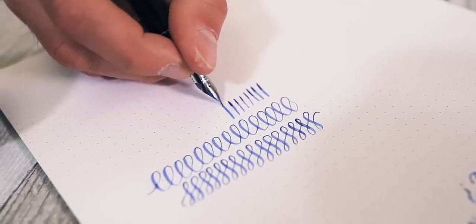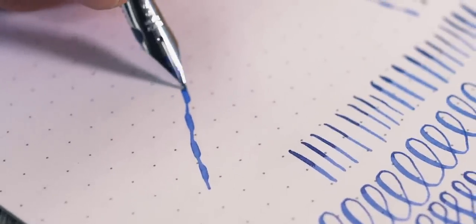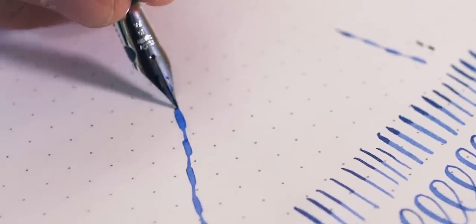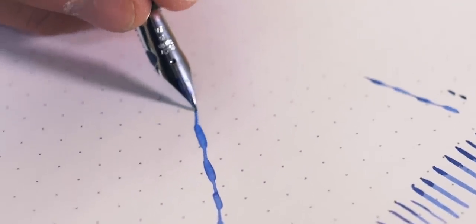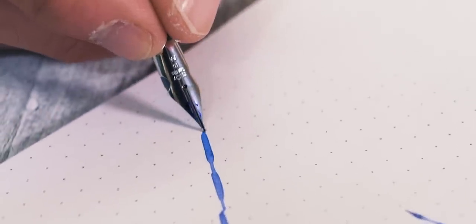The flexibility of a flex nib also varies. Steel flex nibs are often stiffer and require more finger pressure to activate the flex. 14 karat gold flex nibs are often the best choice because they are softer, provide a higher degree of flex, and snap back quickly.